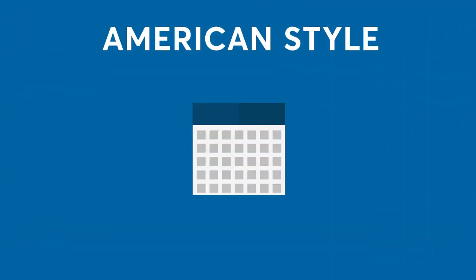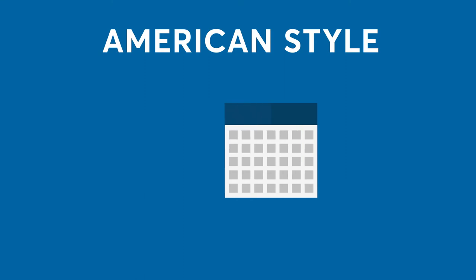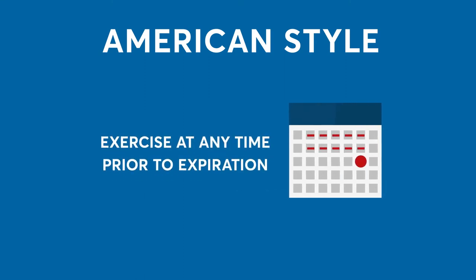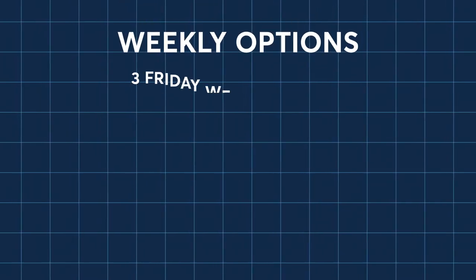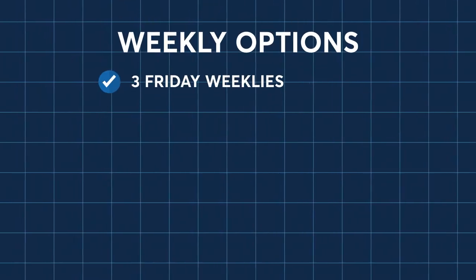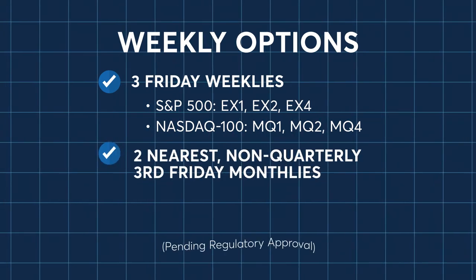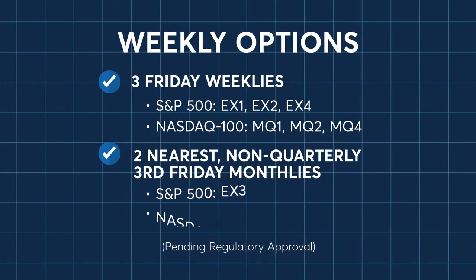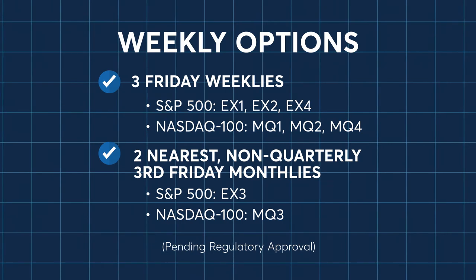Please note that these quarterly options are American-style, which means that the long option holder can exercise the option at any time prior to expiration. In addition to the quarterly options, CME will list five other Friday options: three of the Friday weekly options, and the nearest two non-quarterly third Friday monthlies, sometimes referred to as serials.